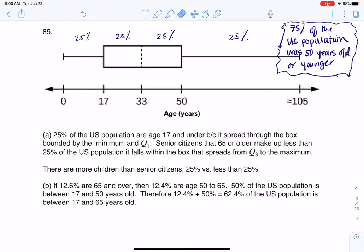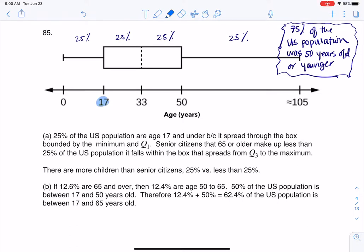This first part A says, are there fewer or more children than senior citizens? Fewer or more children than senior citizens. Which group had more folks in it? Now, they're defining child, and I'm going to color code this as somebody who is 17 or younger. So somebody that's newborn to 17 years old. Here's the category that they're going to call child.